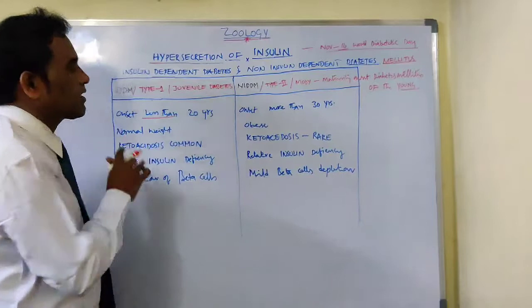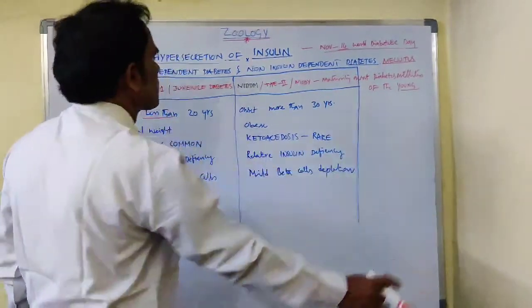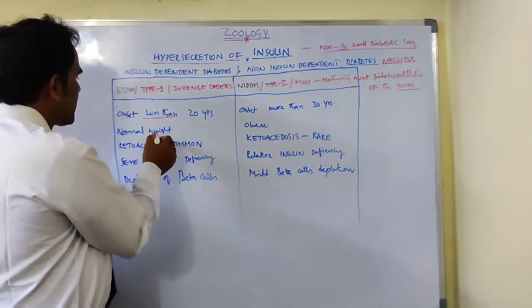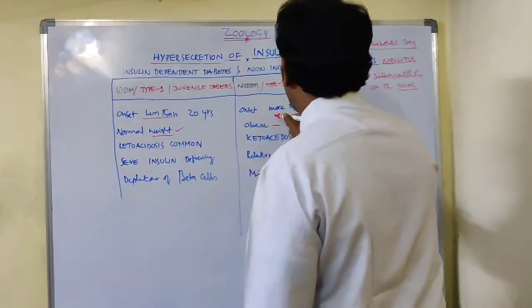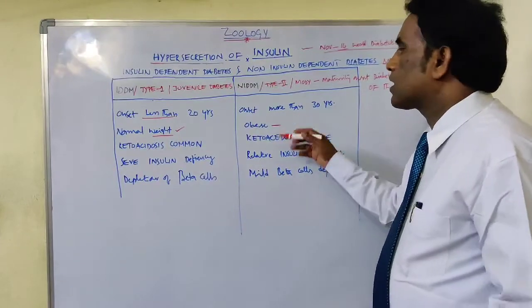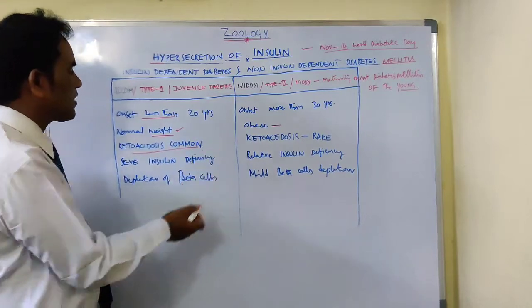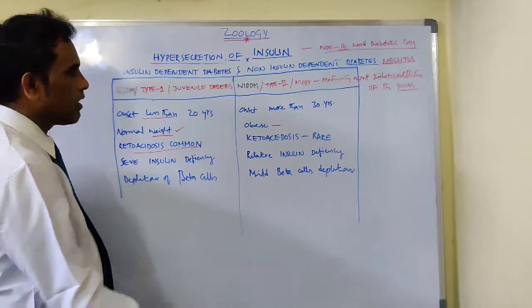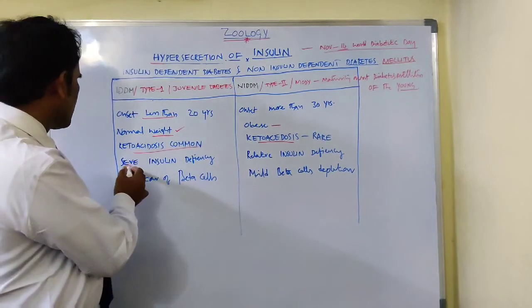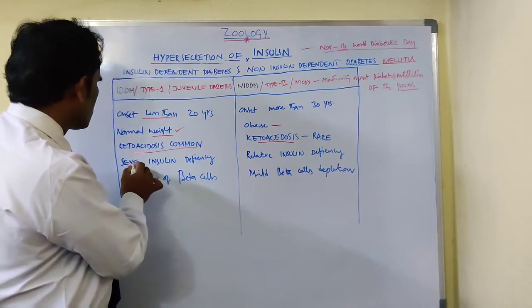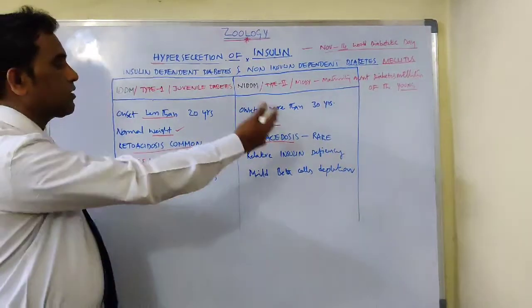Insulin-dependent diabetes has an onset of less than 20 to 30 years, whereas non-insulin-dependent diabetes has an onset of more than 30 years. In insulin-dependent diabetes, the patient's weight is normal, but in non-insulin-dependent diabetes, the patient becomes obese. In insulin-dependent diabetes, the patient frequently suffers with ketoacidosis, whereas in non-insulin-dependent diabetes, ketoacidosis is seen rarely.